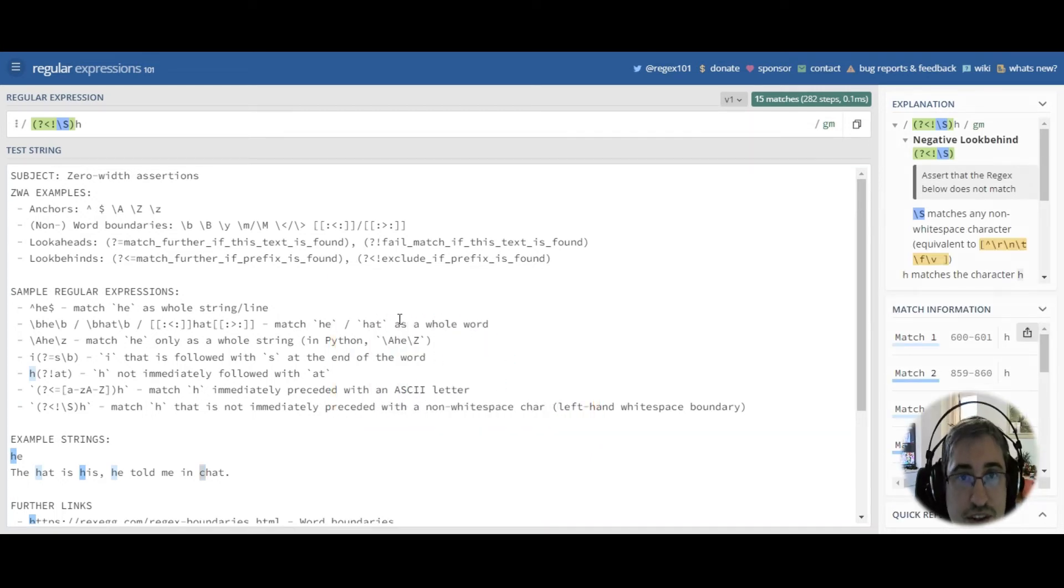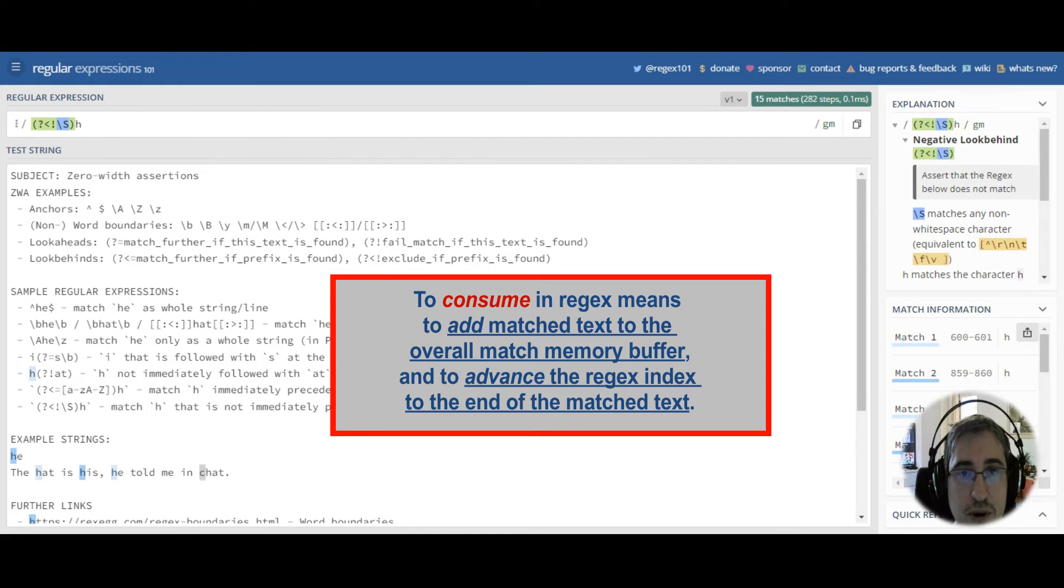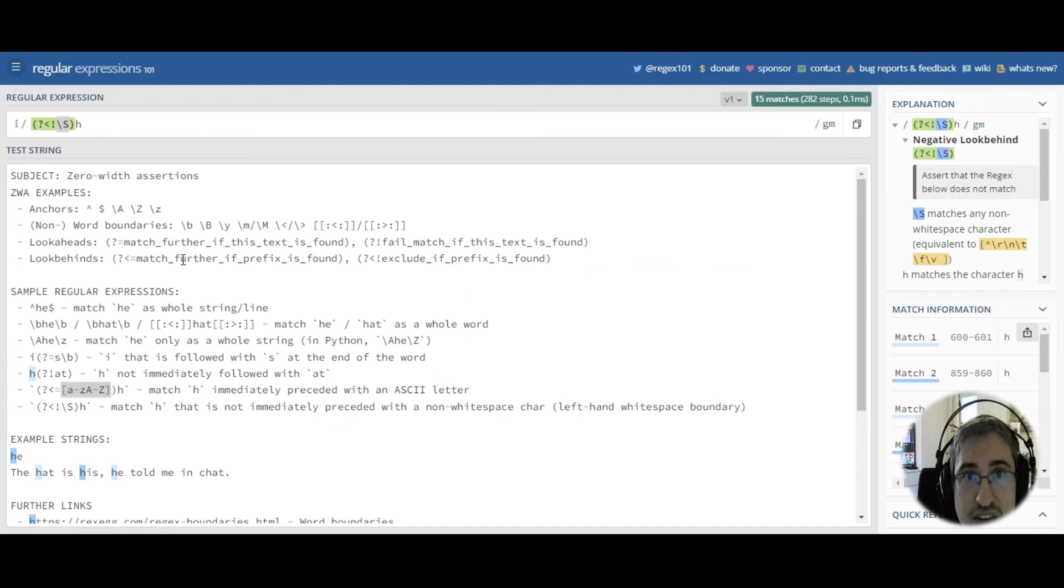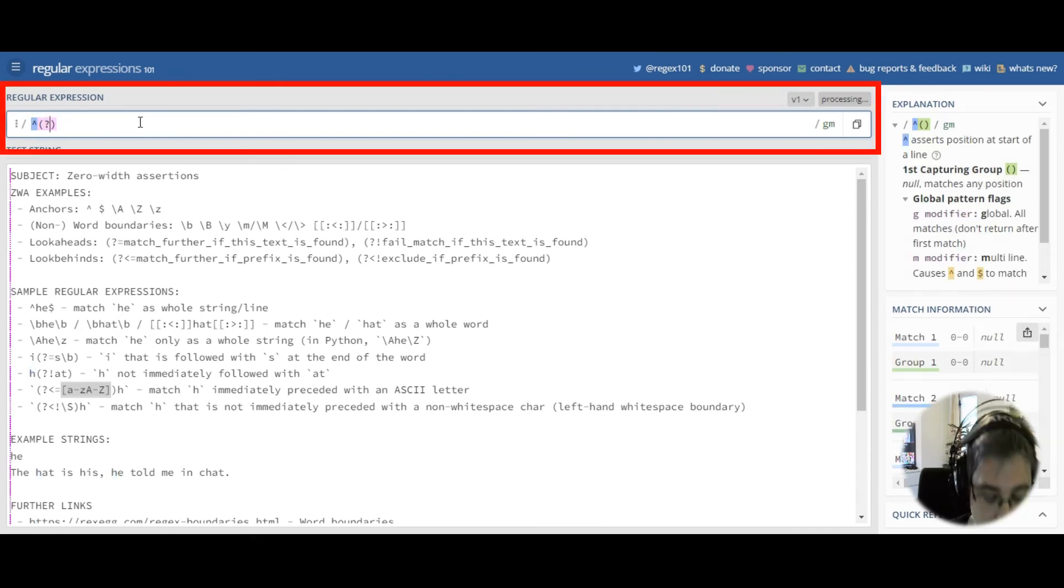When we speak about zero-width assertions, we also should understand the term consuming. Zero-width assertions are non-consuming patterns. When we say that a pattern is non-consuming, we mean that the text matched by this pattern is not added to the overall match memory buffer, and this text is not returned as part of the match value. Also, non-consuming patterns keep the regex index at the location where it was before trying the zero-width assertion pattern. And it also means that if you chain several zero-width assertions at the same location in the pattern, they will be executed at the same location inside the string. They will be executed at the current location, one by one.